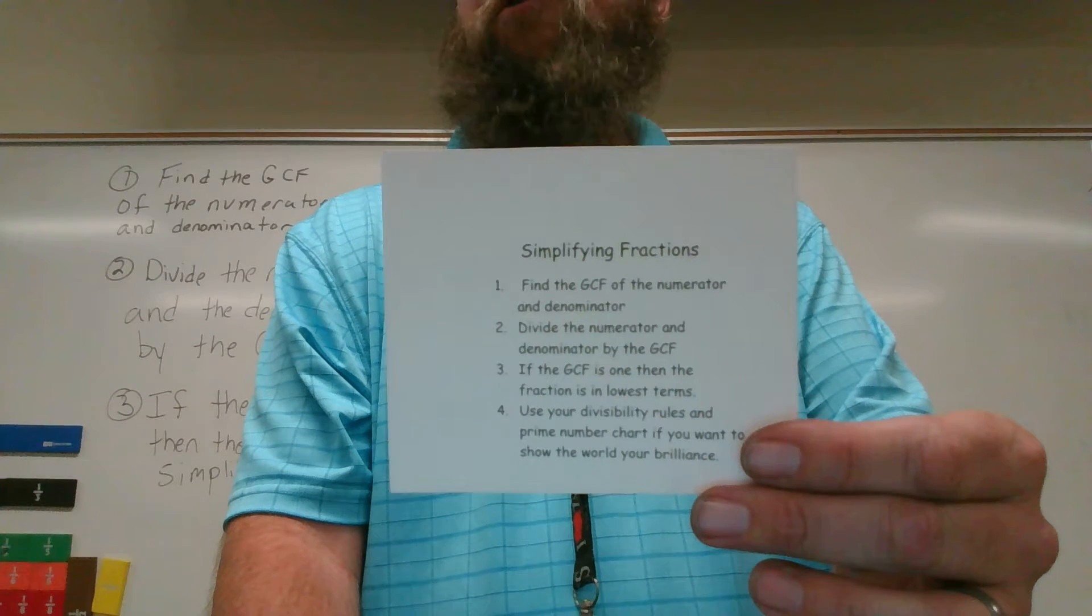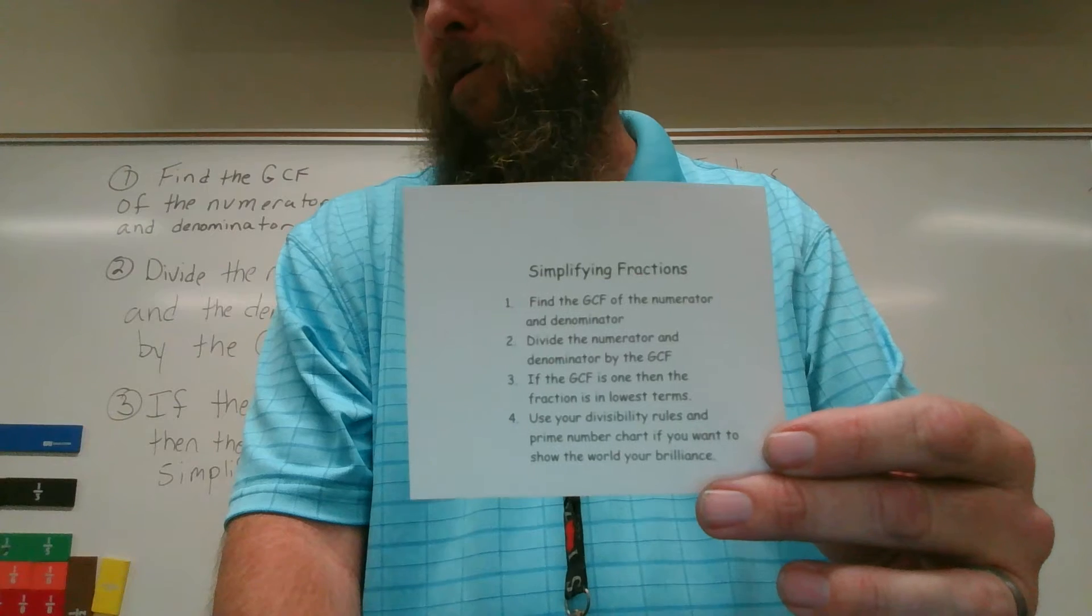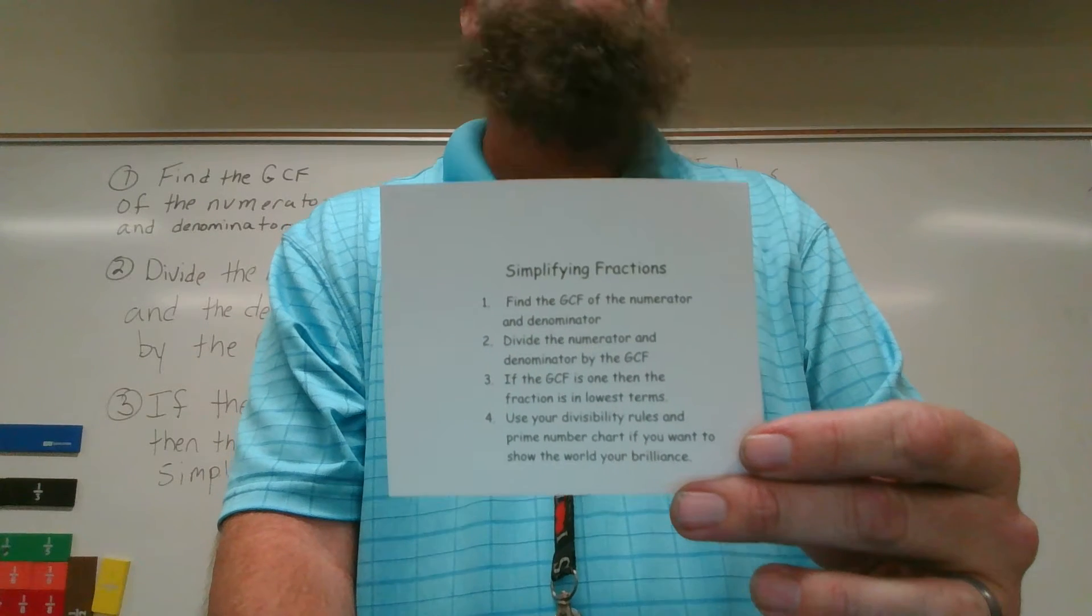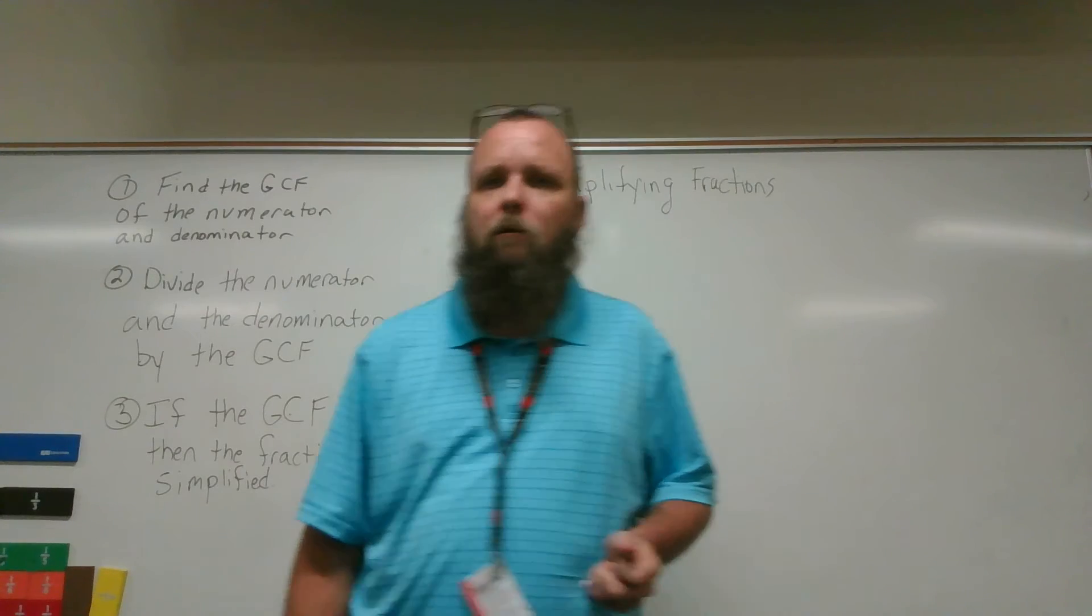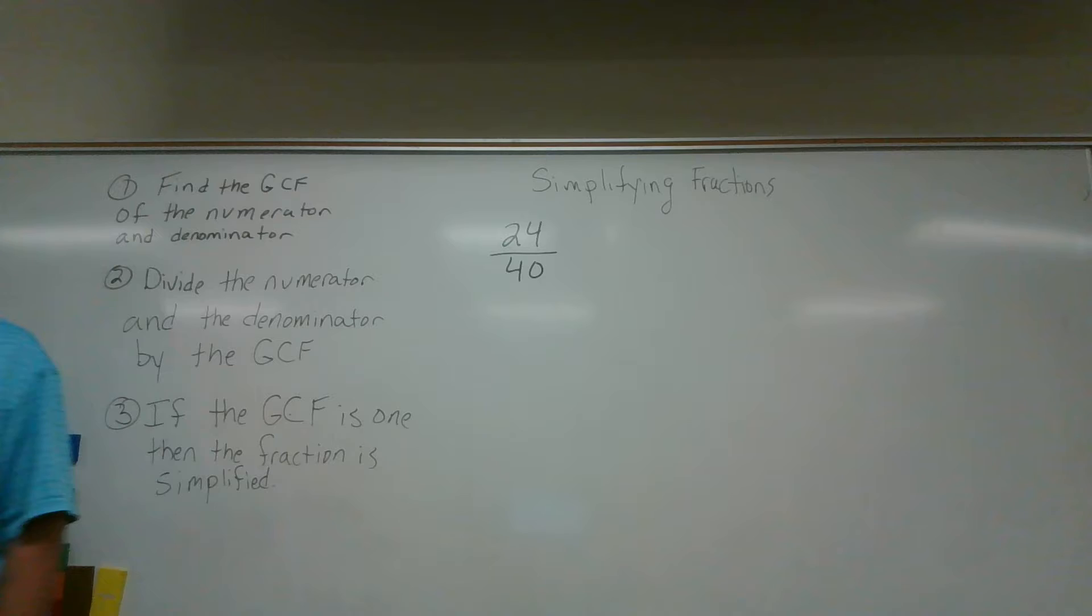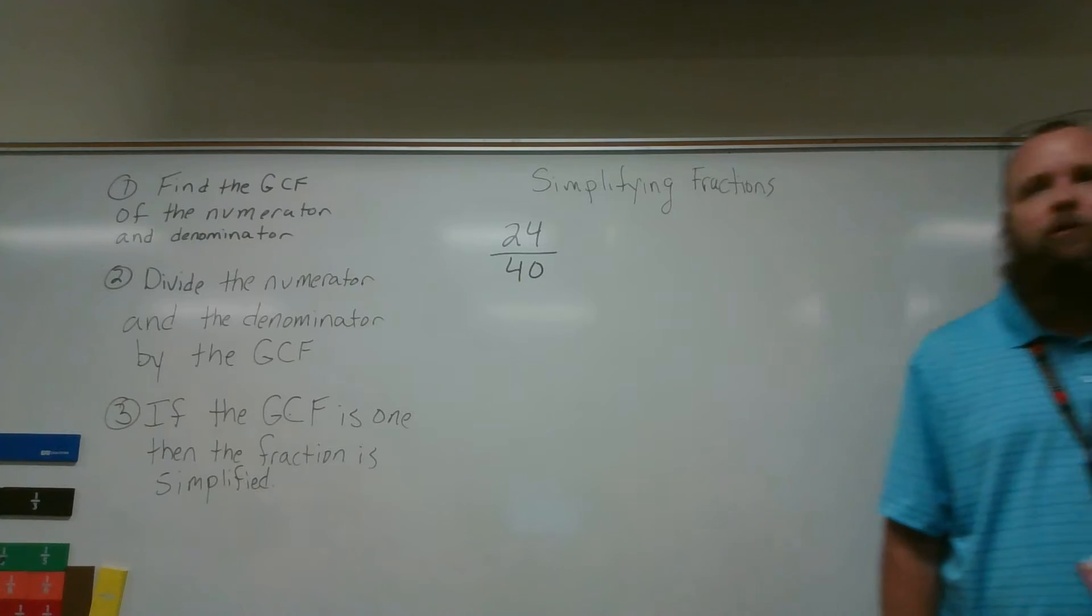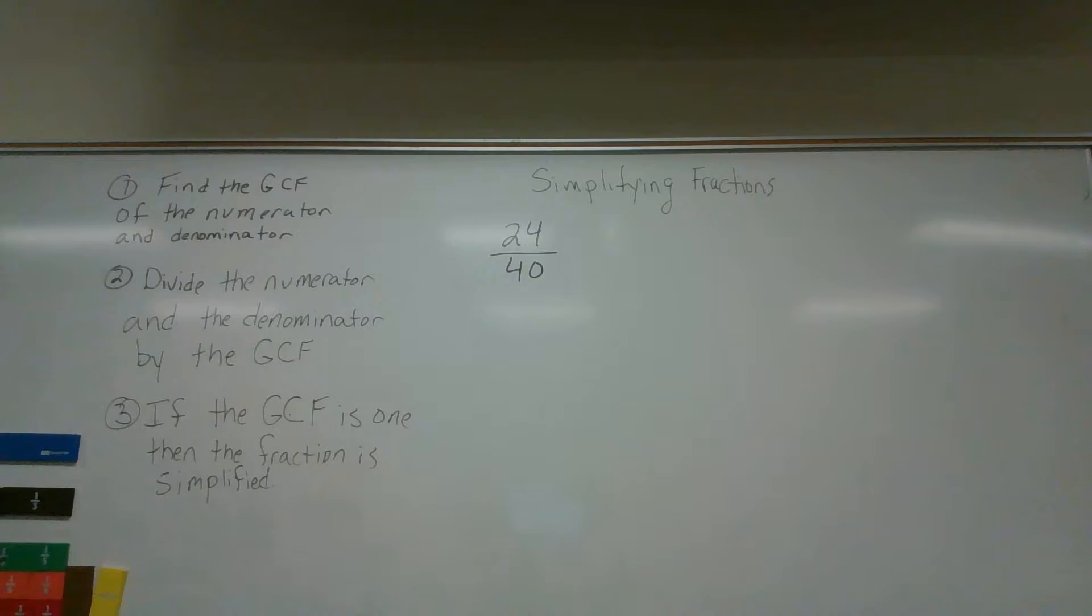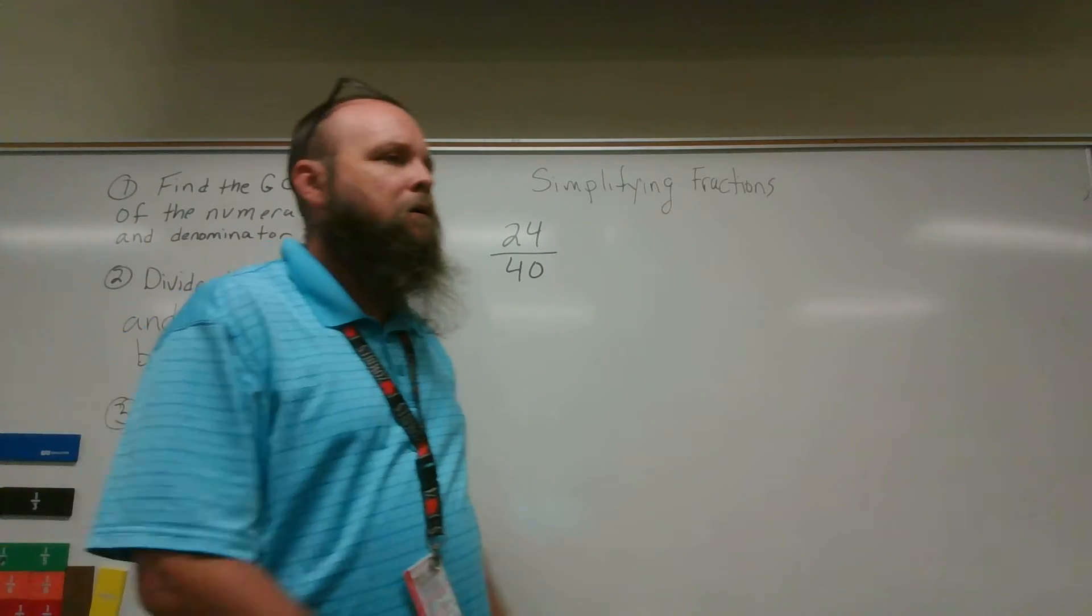These are the notes that you're supposed to be gluing in your journal. There are four items on there. These will be helpful when you are simplifying fractions. The problem that you see on the board, 24/40, is the problem I want you to simplify to lowest terms. You have just glued the steps in your journal. Follow the steps, simplify this to lowest terms, and we'll be back in one moment to solve it.